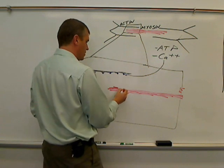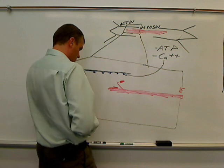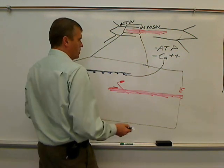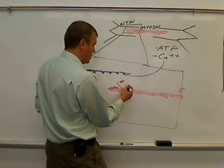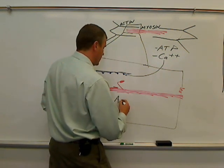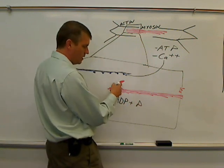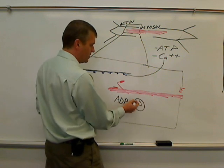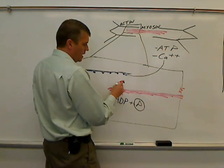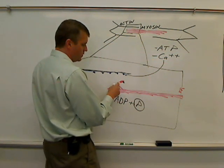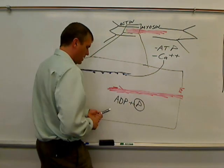Something you should know about the myosin head groups at this point. They have, during the resting phase, they have adenosine diphosphate and phosphate in here, especially the phosphate. They're phosphorylated. And this phosphorylation has actually caused their shape to be more like this. So again, here's the phosphate.